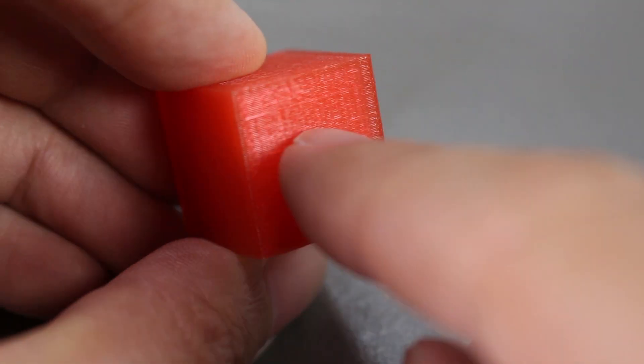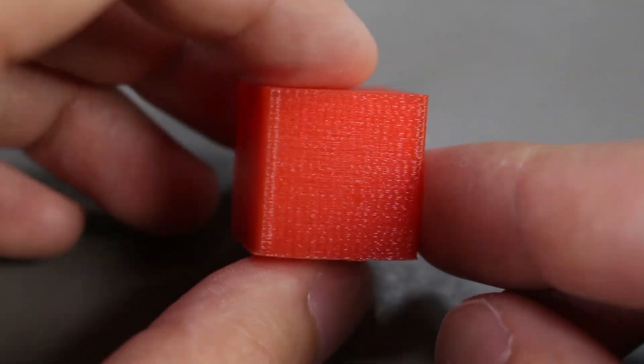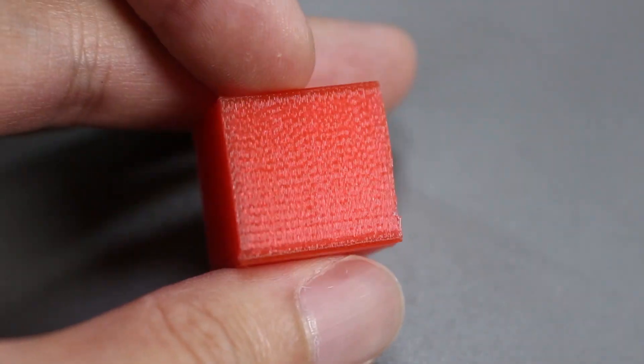Here we have a cube that hasn't been processed before. The layers are really apparent and we can definitely feel them. We can also still see that gloss on this PLA cube.